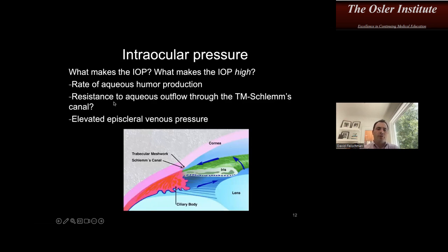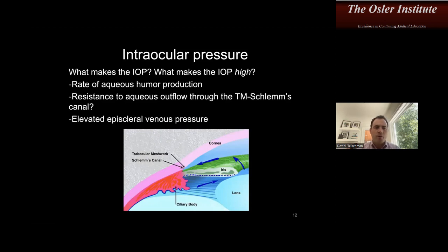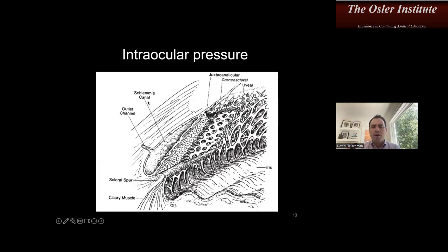What makes eye pressure high? It's going to be either the rate of aqueous humor production, resistance to aqueous outflow through the trabecular meshwork and Schlemm's canal, or elevated episcleral venous pressure. The most common cause is resistance to aqueous outflow through the TM. Elevated episcleral venous pressure is rare, and increased aqueous humor production is almost unheard of as a cause — epidemic dropsy is one of the only conditions associated with increased aqueous production.